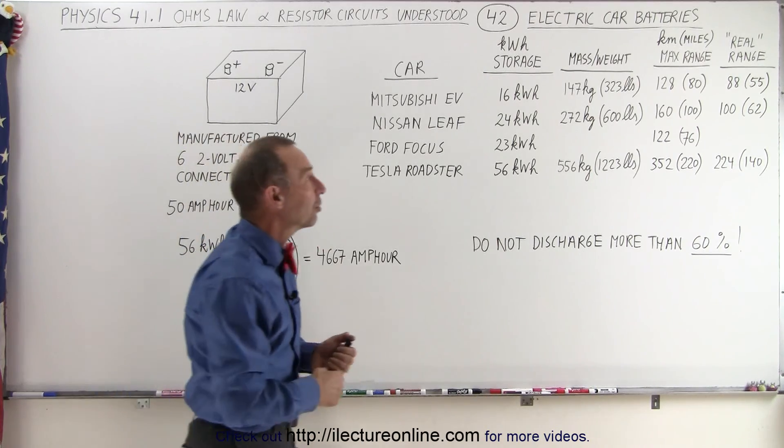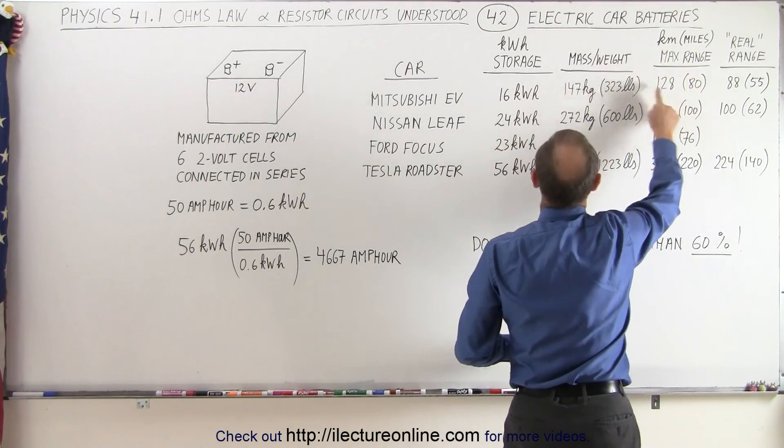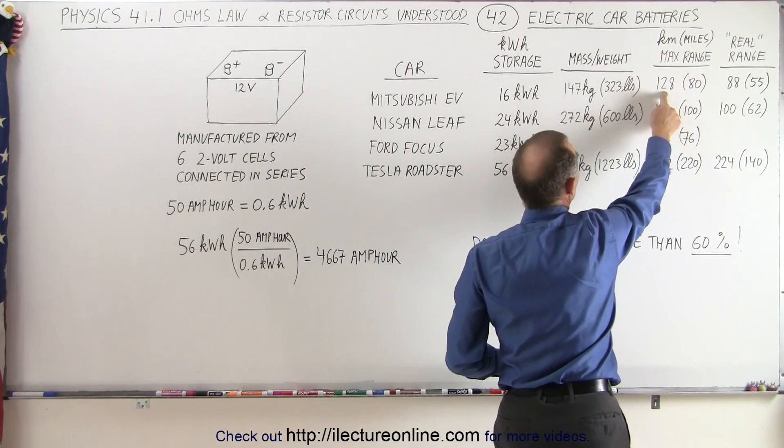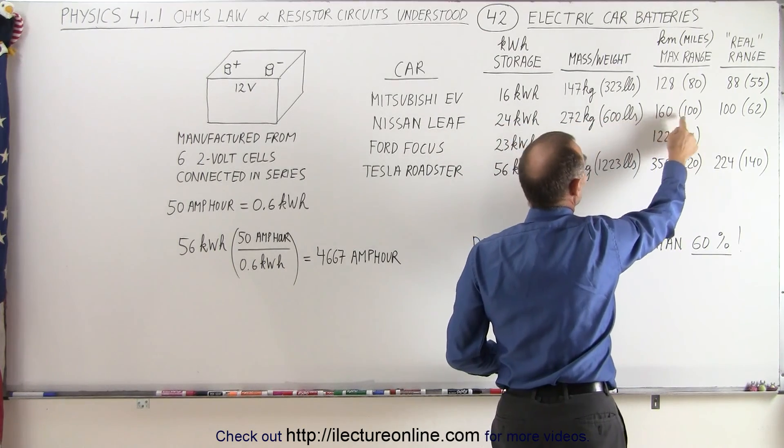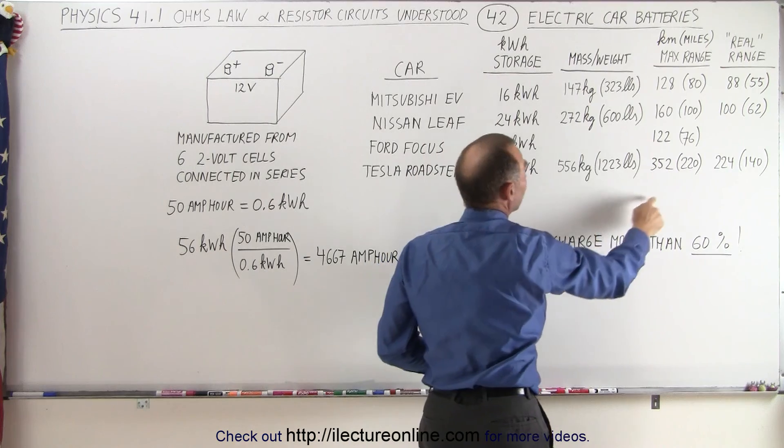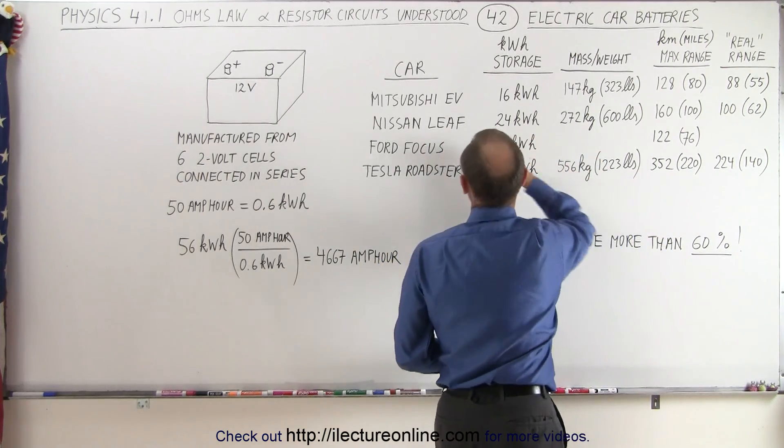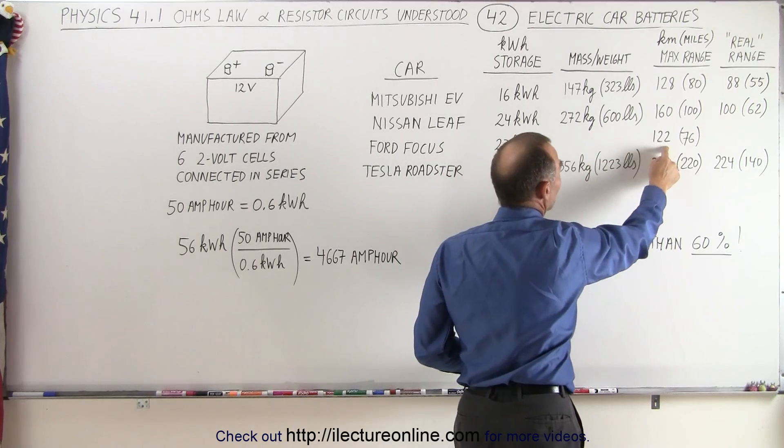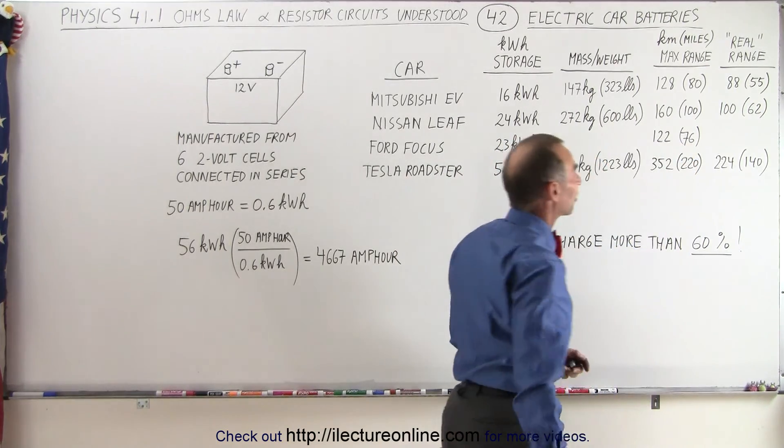So what is the range of these cars? Well, the absolute maximum range in kilometers and miles for the Mitsubishi was 128 kilometers or 80 miles. For the Nissan Leaf was 160 kilometers or 100 miles. And for the Tesla Roadster, it's 352 kilometers or 220 miles. For the Ford Focus, which is a new model on the market, it was 122 kilometers or 76 miles.